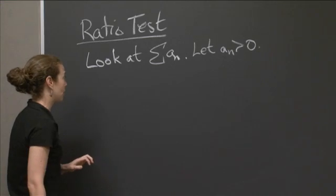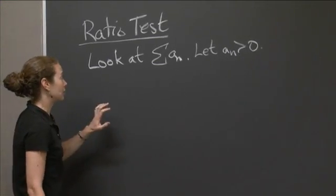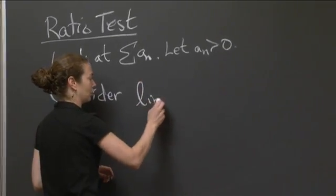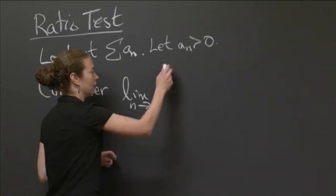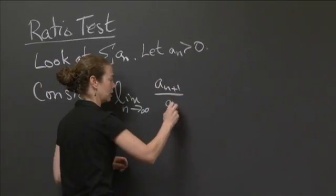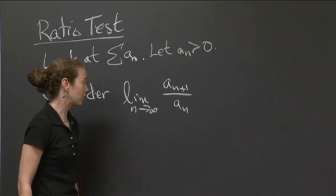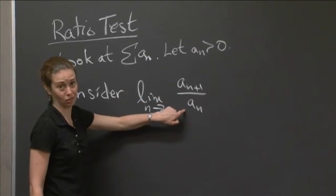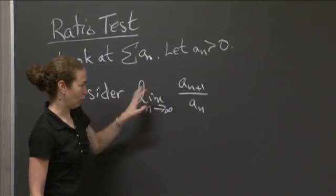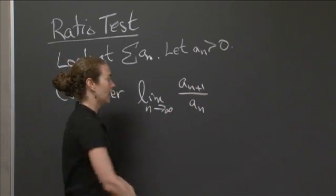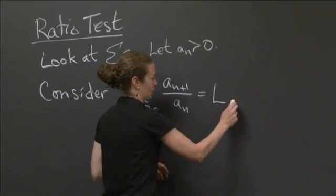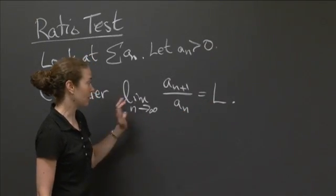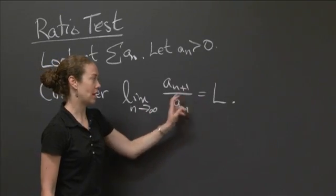What does the ratio test say? We consider the limit as n goes to infinity of a sub n plus 1 over a sub n. That's your ratio — it's taking a term and dividing by the previous term. You do that for all values of n as n goes to infinity, and you look at the limit if it exists. If the limit doesn't exist, you can't use this test. But if the limit exists, you say it equals L.